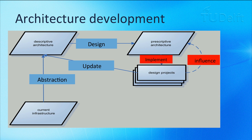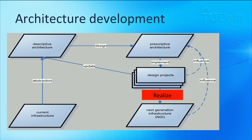The experience and results of the design projects and resulting infrastructure influence the prescriptive architecture, because new standards, architectural principles, reusable building blocks and so on are created in those design projects. Finally, the effort should result in a next generation IT infrastructure. Architecture is an abstraction of the existing IT infrastructure and the next generation of IT infrastructure. A good architecture contains both descriptive and prescriptive elements.